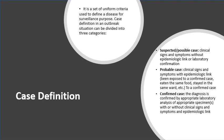Suspected or possible cases are essential in an outbreak because they help implement protocols such as isolation and management. Probable cases add to suspected cases by including clinical signs and symptoms with an epidemiological link.